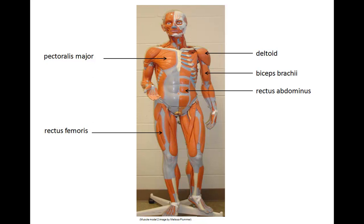Pectoralis major — adducts the arm toward the front to aid in climbing, throwing, or pushing. Rectus femoris — extends the knee joint, kicking. Deltoid — abducts the humerus, as in the scarecrow position. Biceps brachii — flexes the elbow joint. Rectus abdominis — flexes the vertebral column, as if you were doing a sit-up or a crunch.